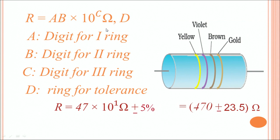Now, how to read the values? There is a very simple formula: R is equal to AB × 10^C ohms. What is A? A is the digital value of the first colored ring opposite to the golden ring. So, yellow has a digital value 4.